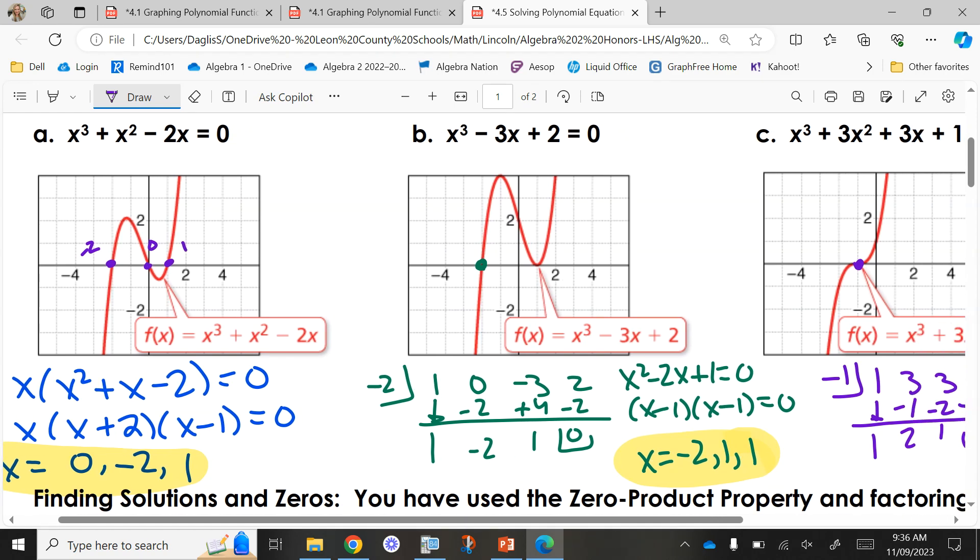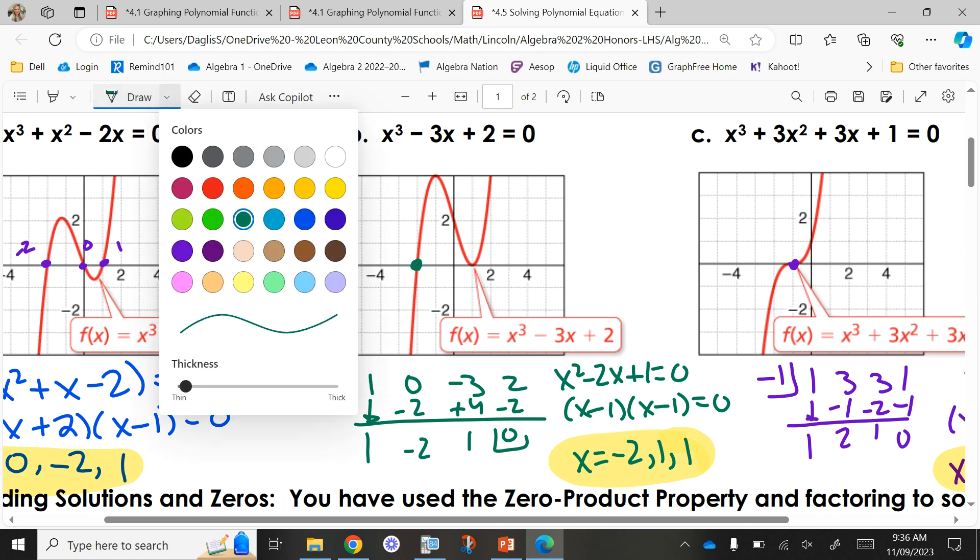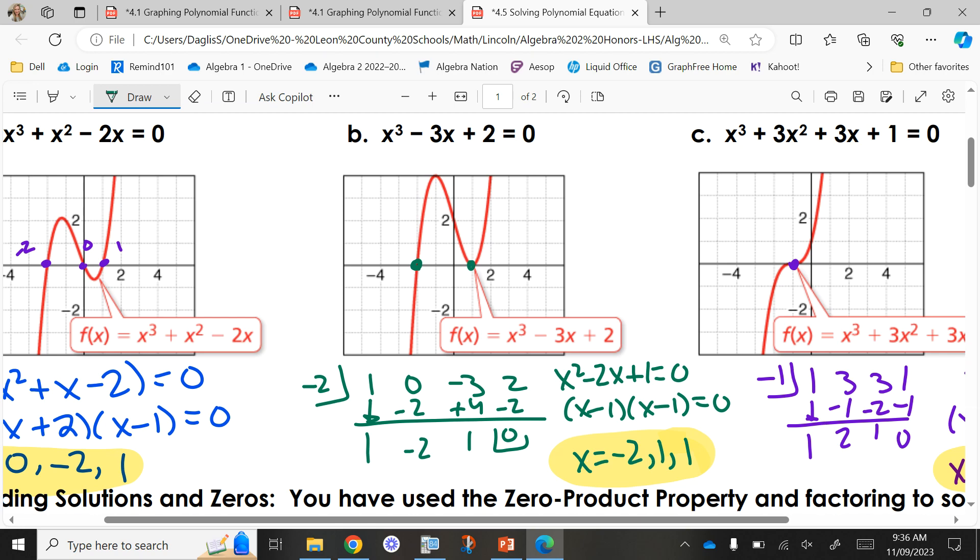How about this graph in the middle, though? How many times did it cross the x-axis? It only crossed twice. So how do I have three answers? Look at my values. I have negative two, one, one. See how I got x equals one twice? See how your behavior changed when we got to x equals one? It didn't cut through anymore. What did it do? It bounced off of it. That's called a repeated solution. That's what we're going to look at today.